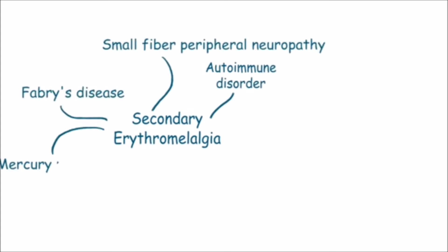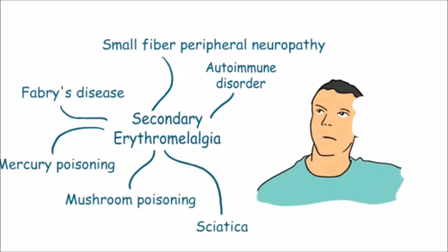Secondary erythromelalgia can be seen in association with other comorbidities such as autoimmune disorders, small fiber peripheral neuropathy, Fabry's disease, mercury poisoning, mushroom poisoning, and sciatica. However, the relationship with these diseases is still unclear.